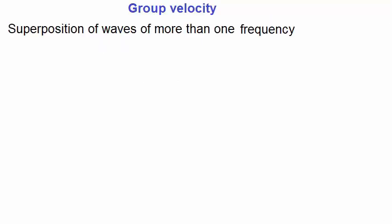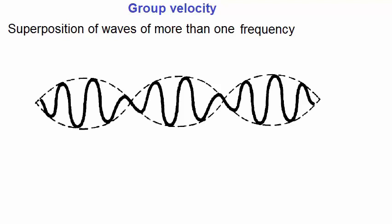Whenever there is a superposition of many waves with various frequencies and velocities, such as this, which is really just a superposition of two waves, we assign a velocity to this bundle of waves known as the group velocity. In this case, we can look at it as the velocity of the envelope, vg.